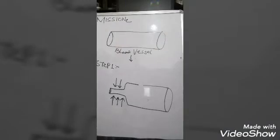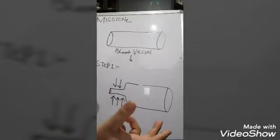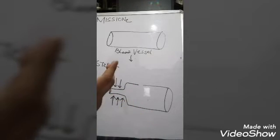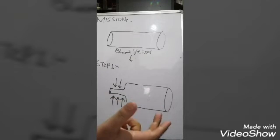We are studying the circulatory system and discussing blood vessels. We have already discussed the artery, the arteriole, the capillary, and the vein.